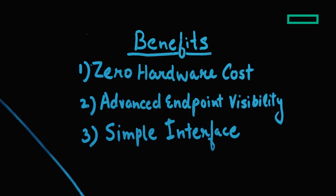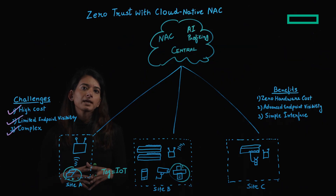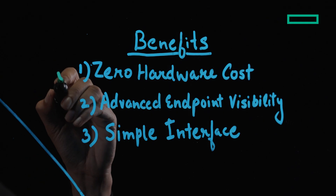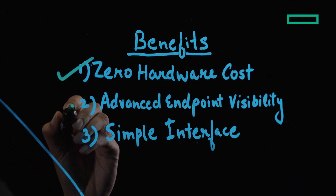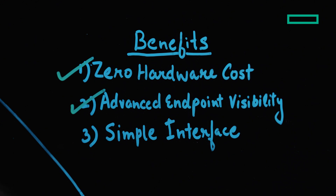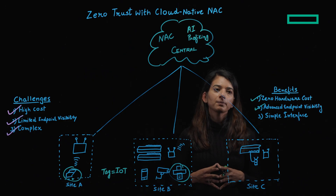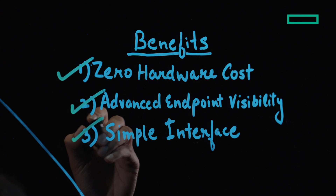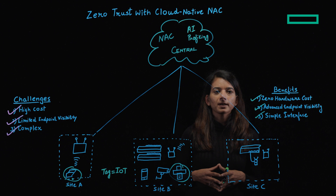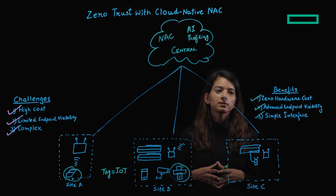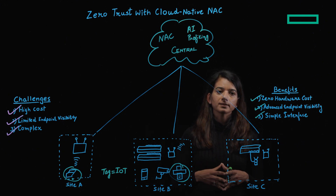Together, these capabilities make the Central NAC solution a great way for modern enterprises to adopt into their zero-trust journey. Key benefits include zero hardware cost — there is no hardware cost as part of the solution. Advanced endpoint profiling gives you comprehensive visibility with the help of an AI-driven profiling engine. And lastly, most importantly, the simple interface — an easy, intuitive interface for end users to configure and deploy their policy statements.